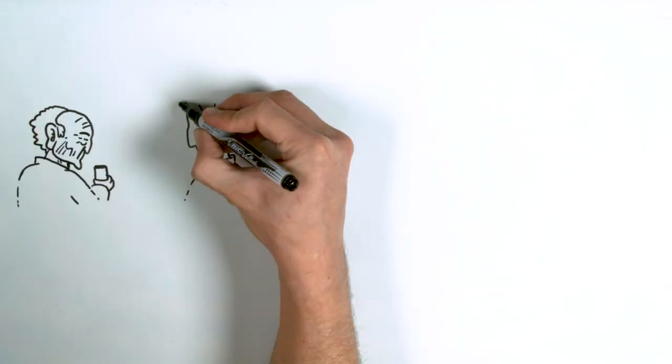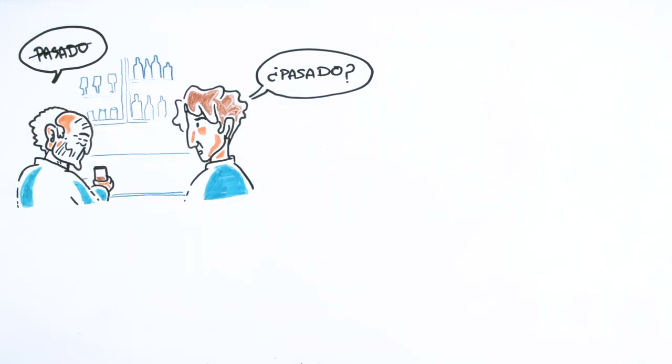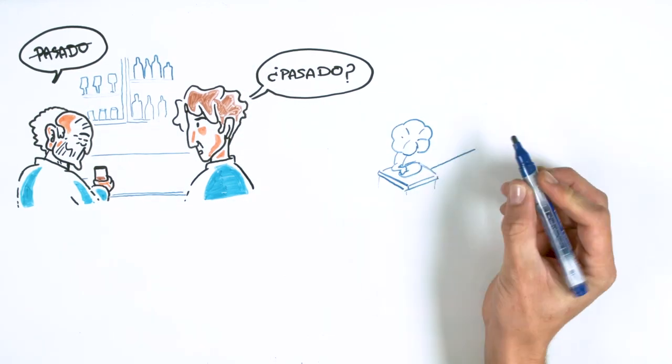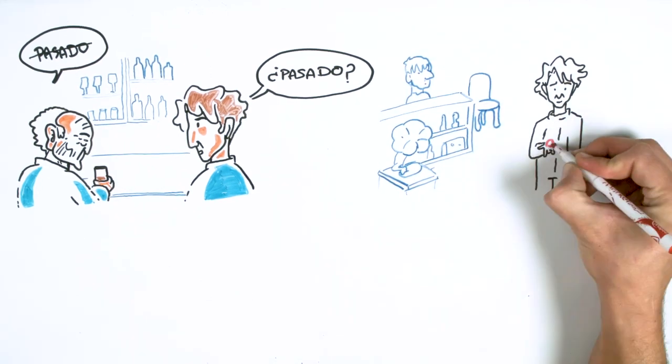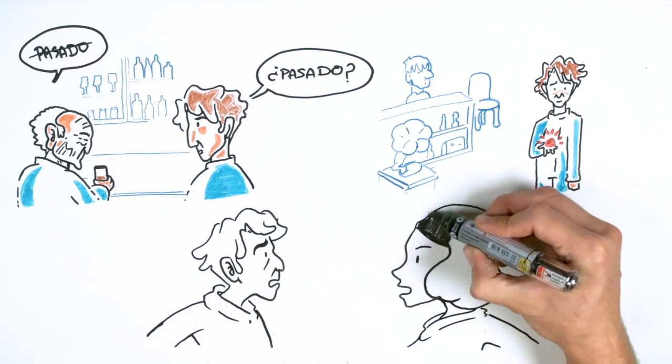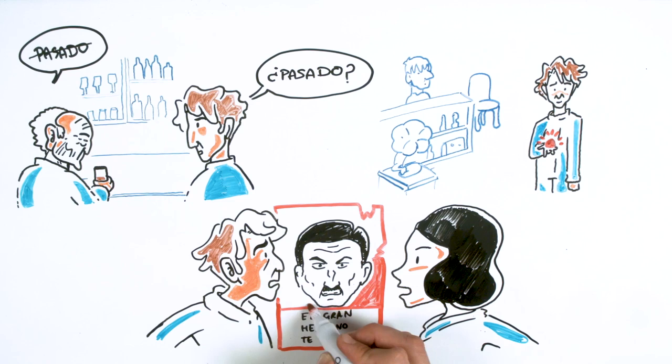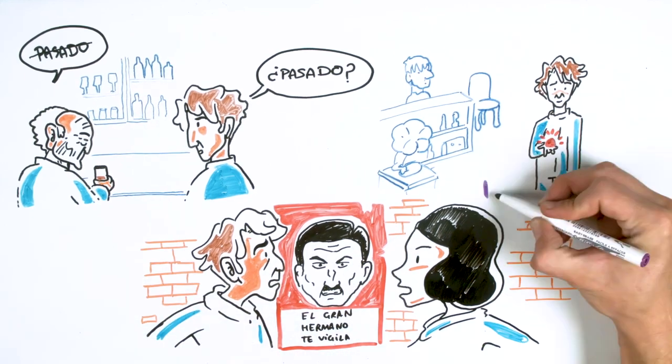Winston walked to the neighborhood of the proles. After unsuccessfully trying to get some information about the past from an old man, he went to the store where he bought his diary. He bought a coral stone. Going to those places and buying goods was very frowned upon. So when he left the store, his heart stopped when he came across the brunette girl. They both hid and Winston went home, terrified of the torture he would receive if someone discovered him.